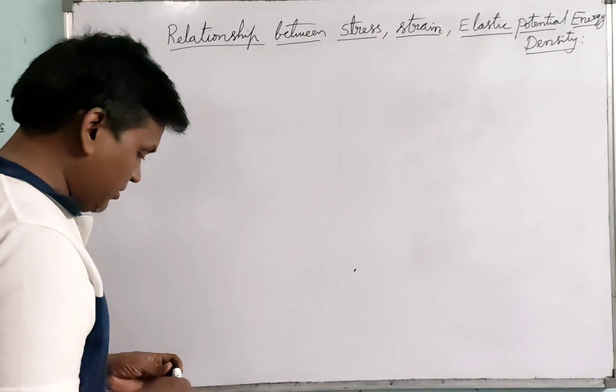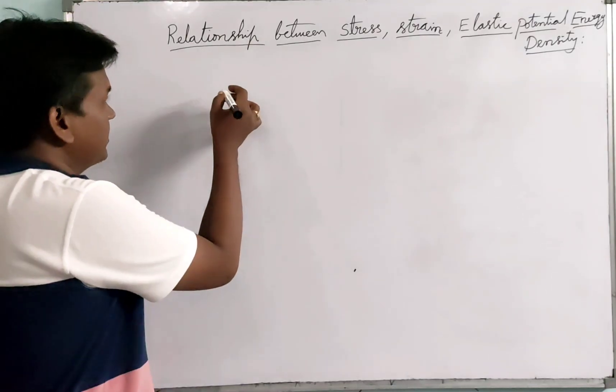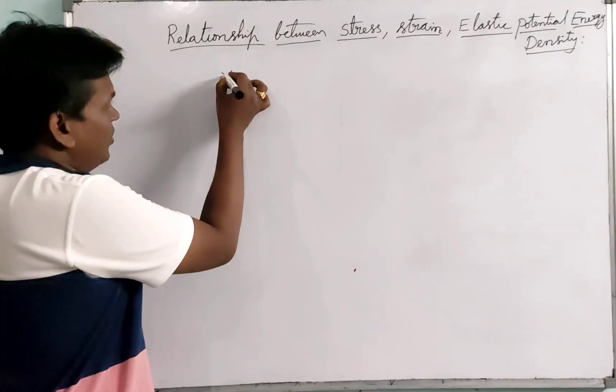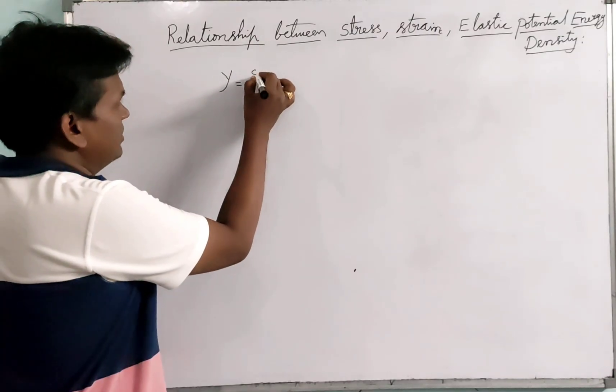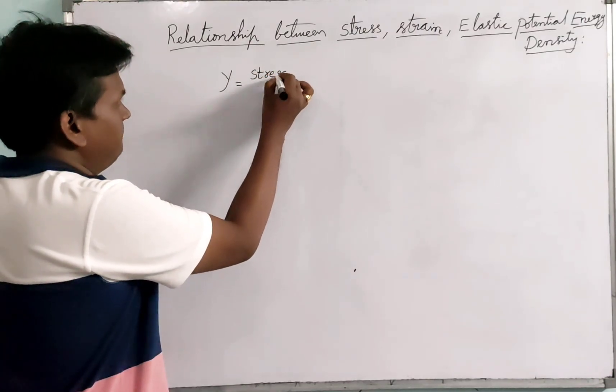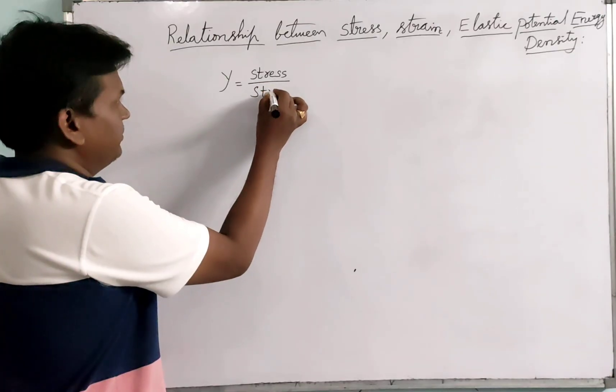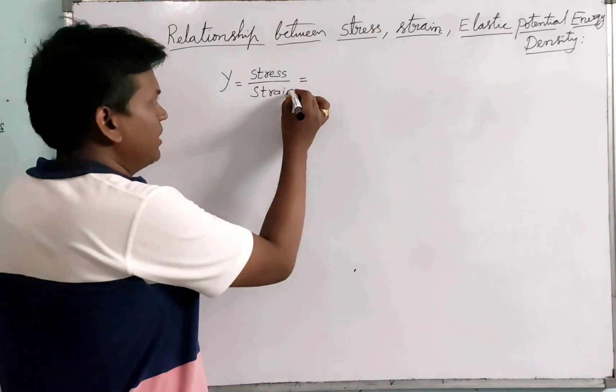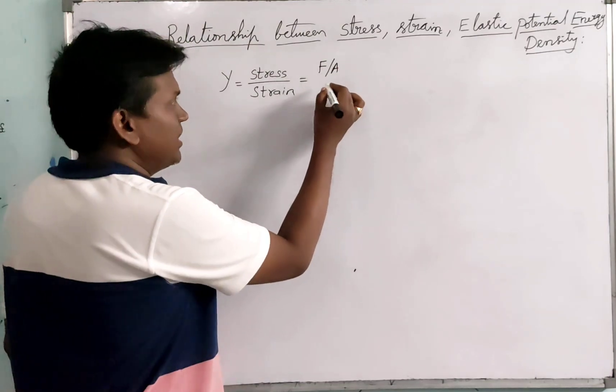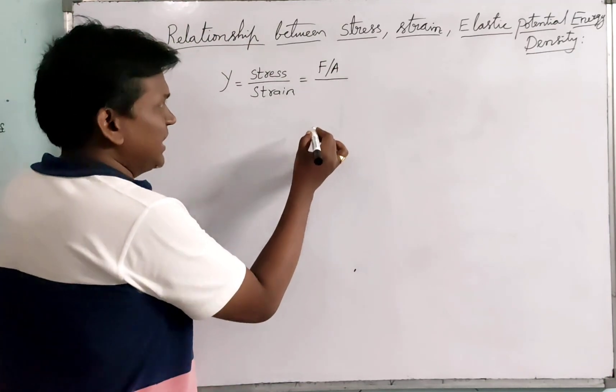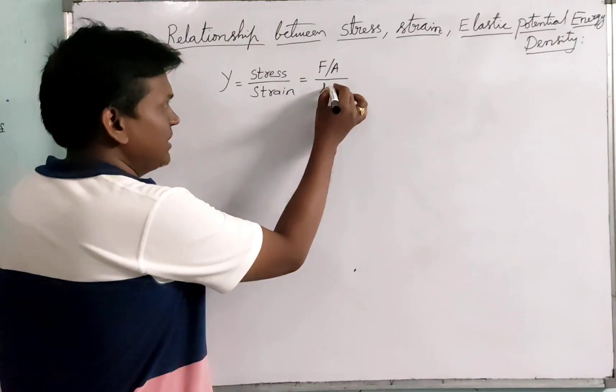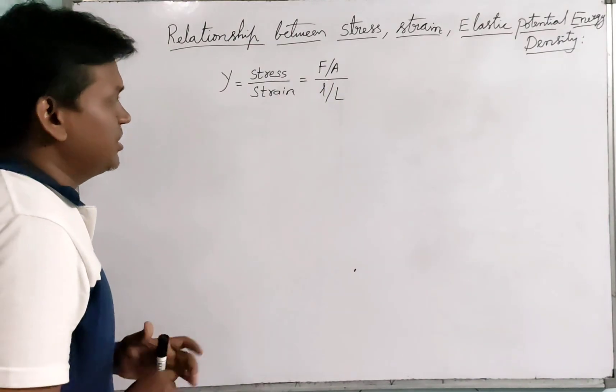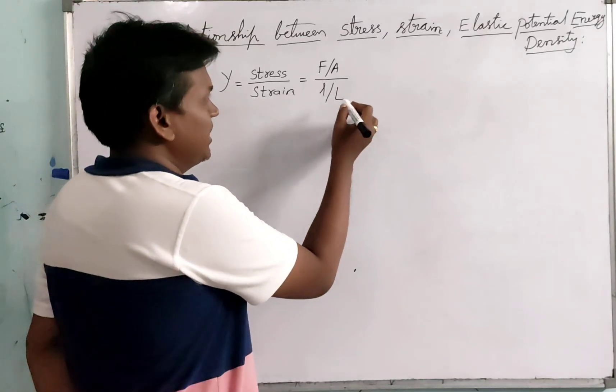Coming to Young's modulus, in previous class we discussed about Young's modulus. Young's modulus Y equals stress upon strain. Stress upon strain can be written as stress equals force upon area and strain can be written as change in length by original length,